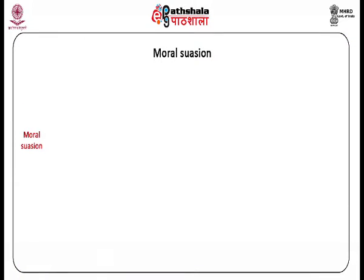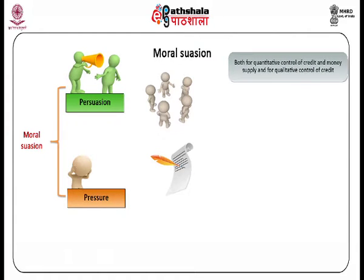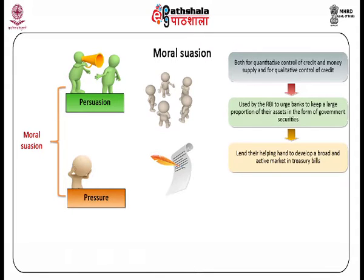Moral suasion is a combination of persuasion and pressures which a central bank is always in a position to use on banks in general and errant banks in particular. This is exercised through discussions, letters, speeches, and hints thrown to banks. It can be used both for quantitative control of credit and money supply and for qualitative control of credit — that is, control over the distribution of bank credit. The RBI can use moral suasion to urge banks to keep a large proportion of their assets in government securities, help develop a broad and active market in treasury bills and other government securities, and not borrow excessively when it is engaged in fighting inflation.